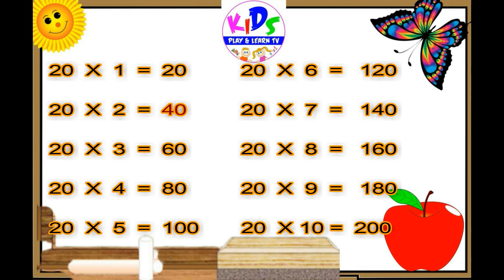20 sixes are 120, 20 sixes are 120. 20 sevens are 140, 20 sevens are 140. 20 eights are 160, 20 eights are 160. 20 nines are 180, 20 nines are 180. 20 tens are 200.